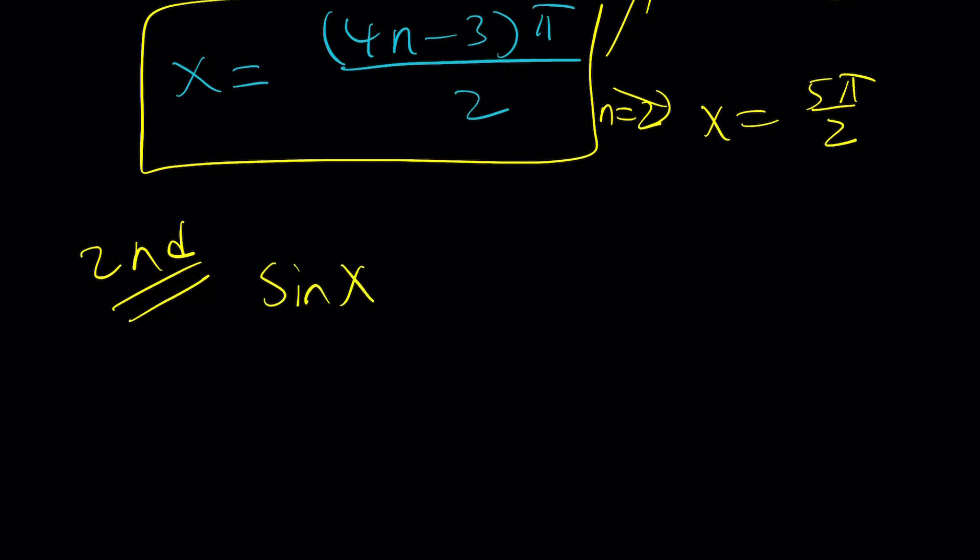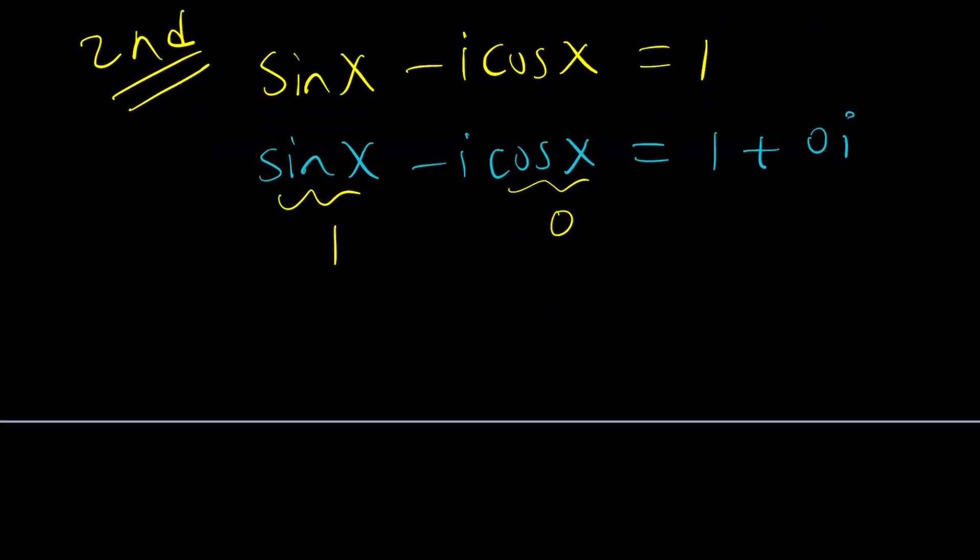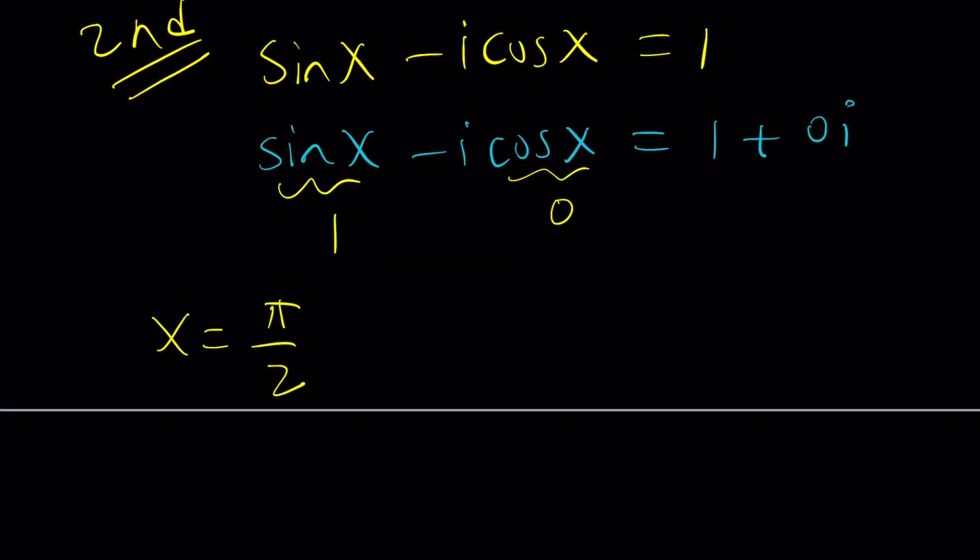Second method, sine x minus i cosine x equals 1. I'm going to write the right-hand side. I know most of you thought about this method. I'm going to write 1 as 1 plus 0i. This is the standard form or the rectangular form. And now, we can compare the real parts. So, sine x must be 1 and cosine x must be 0. What does that tell you? That means x is pi over 2. Or 90 degrees. Wait a minute. Pi over 2 is not the only solution, though. Because you can add multiples of 2 pi. So, plus 2 pi k, where k is an integer, is going to do it.